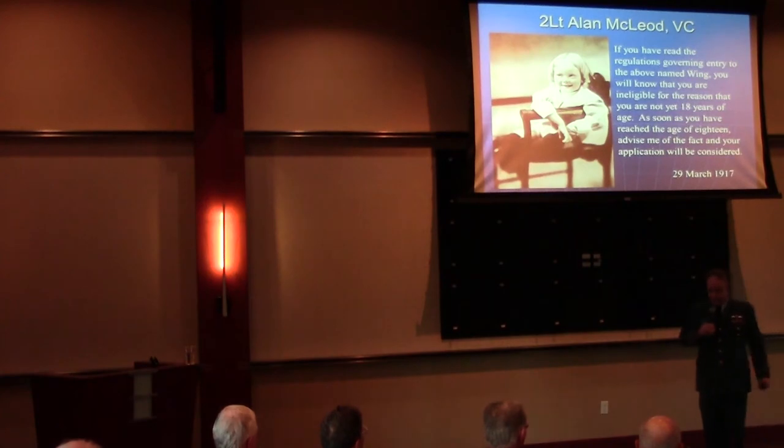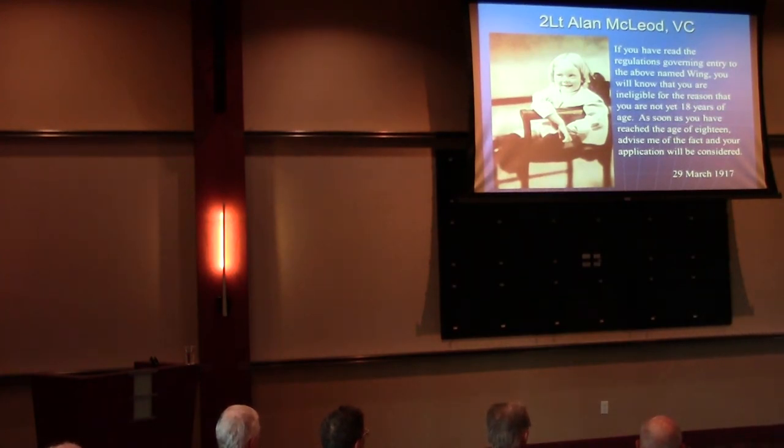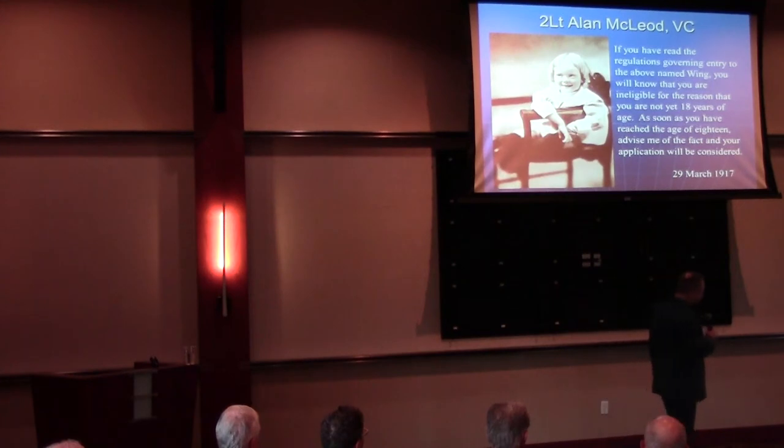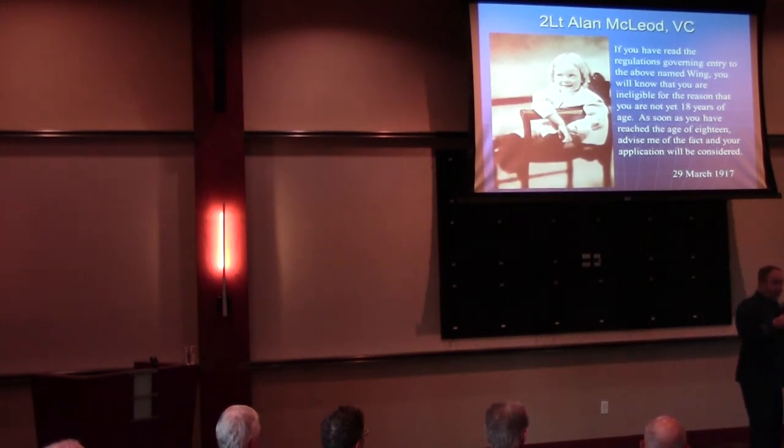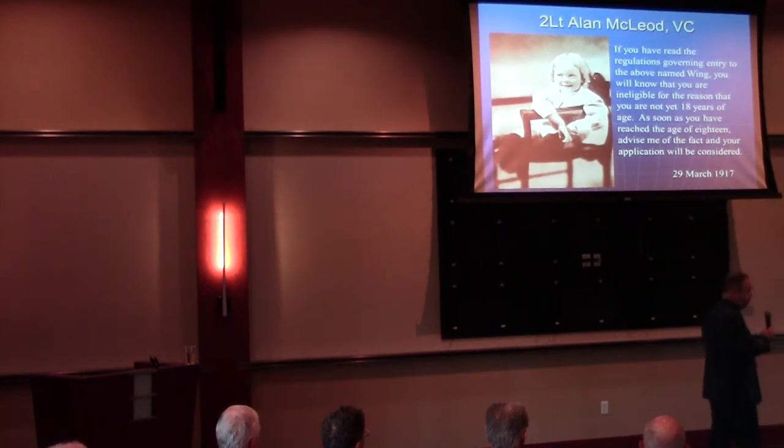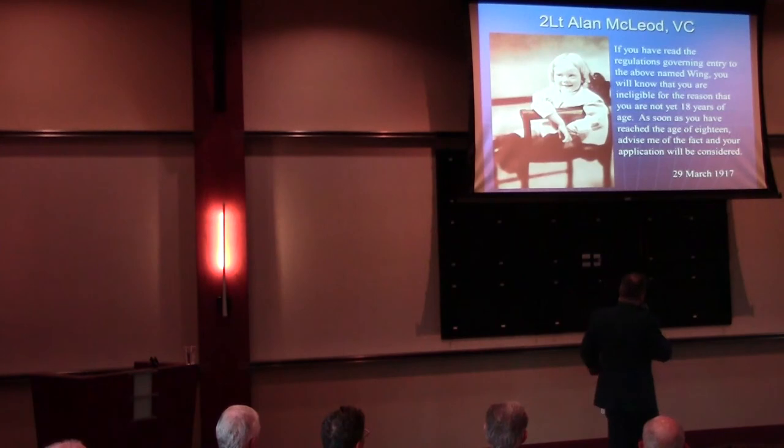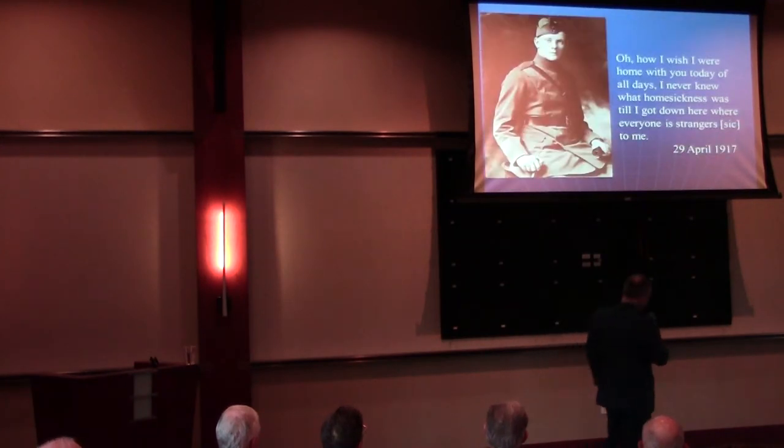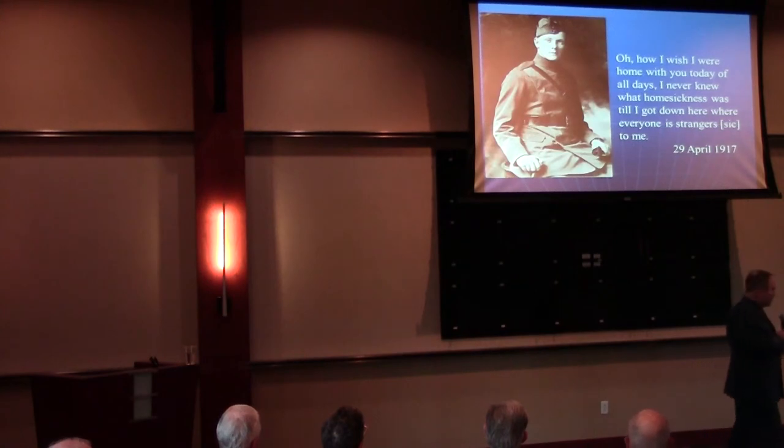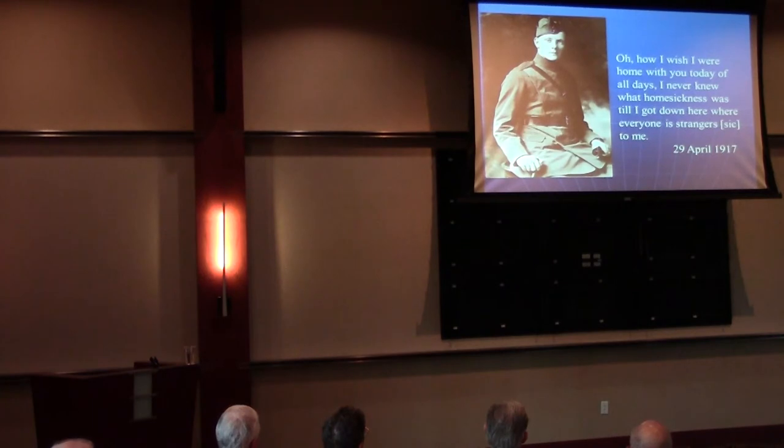So we're going to tell the story about Alan Arnett McLeod. This is Alan McLeod, and this is his intrepid gunner, Lieutenant Hammond. So as you can see from this slide, Alan, when he wanted to join the war, he was too young. So the Royal Flying Corps said, bugger off, come back when you're 18. So he's 18 years old now and we sent him off to the greatest city in the world, Toronto, in order to get his training. And like any other 18 year old, his thoughts are, I'm homesick, I want to go home, this sucks, people are giving me orders, I have to get a haircut. So nothing that we haven't experienced before. But he completed his training and we sent him off overseas when he was 18 years old.